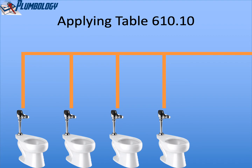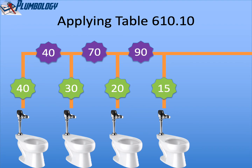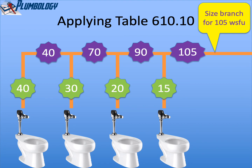Moving on to four water closet flush valves. We use the same decreasing scale: 40, 30, 20, 15. Going back and doing the pipe segments, it'll be 40, 70, 90, and 105. We would size the branch for 105 water supply fixture units.